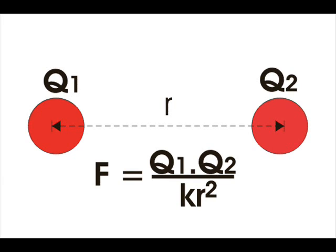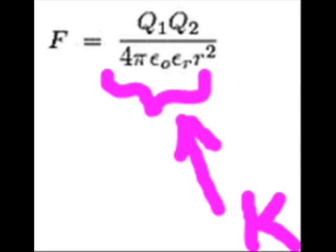In SI system, force is measured in Newton, distance is measured in meter, charge is measured in Coulomb, and K equals 4 pi epsilon 0 epsilon r.